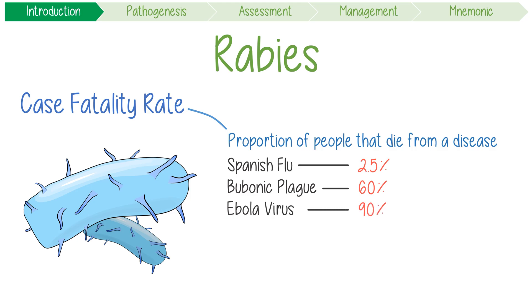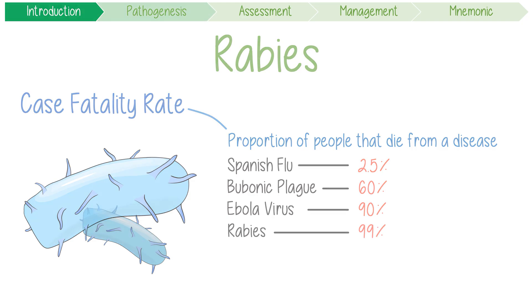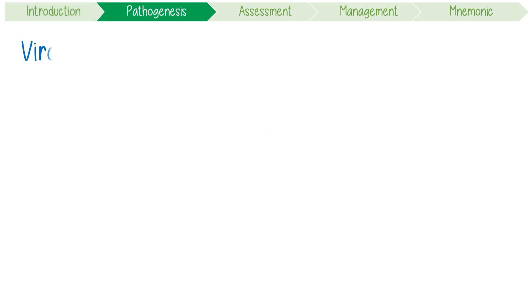For unvaccinated individuals, rabies will kill 99% of people. To understand why this is, let's learn about its virology.